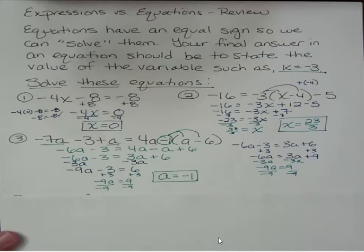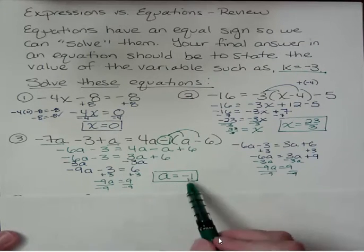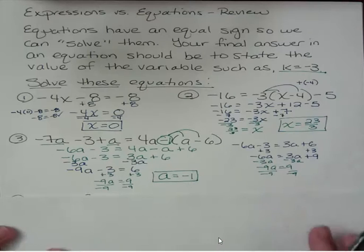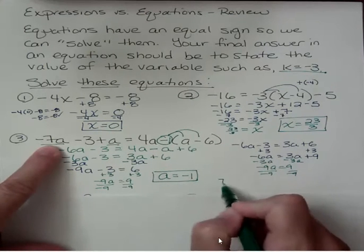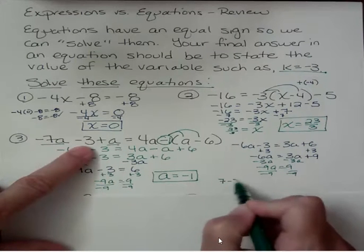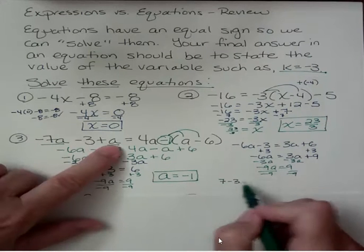And you can, of course, check that by plugging in a negative 1 into that equation. Let's do it in a shortcut fashion. What is negative 7 times negative 1? Well, that would be 7. Then I have negative 3. Then I have just a, which is a negative 1. Over here, I have 4 times a. That's 4 times negative 1, or negative 4,